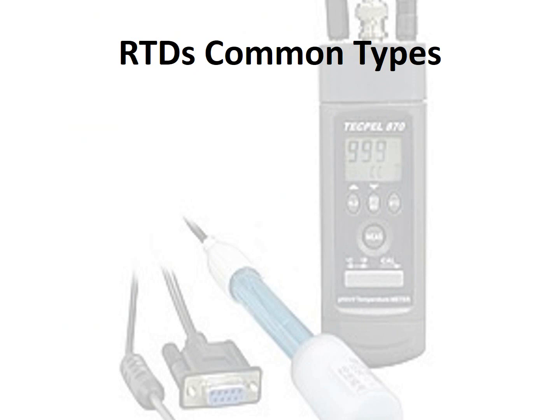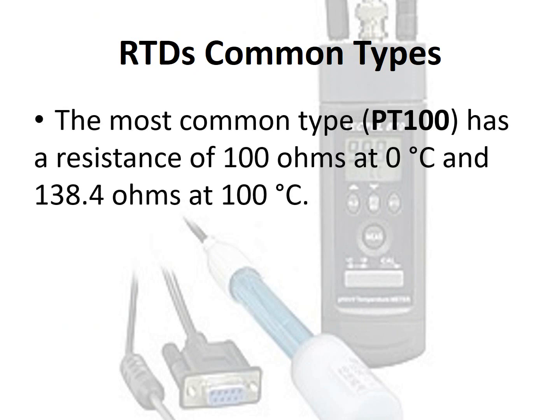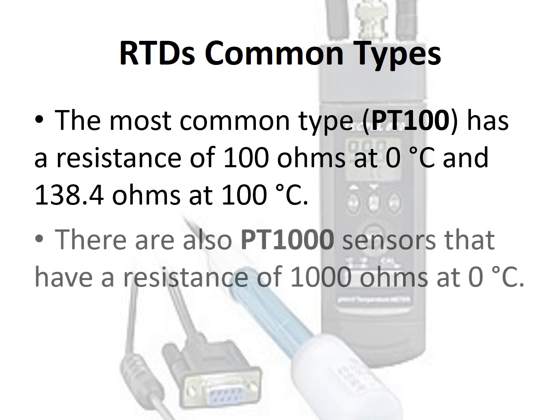The most common RTD type, Pt100, has a resistance of 100 ohms at 0°C and 138.4 ohms at 100°C. There are also Pt1000 sensors that have a resistance of 1000 ohms at 0°C.